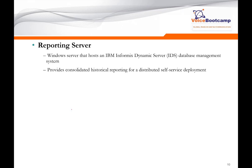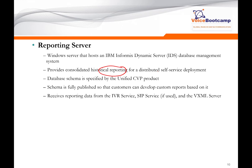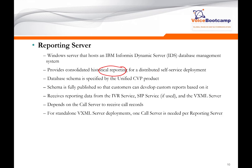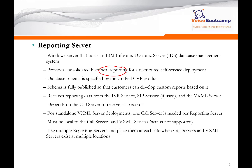The reporting server runs on Windows Server, which hosts IBM Informix database. It provides consolidated historical reporting for distributed service deployments. The database schema is specified by the CVP product and is available to customers for further custom creation of reports. It receives data from IVR service, SIP service, or VXML server. For standalone VXML server deployment, you need at least one call server for every reporting server. The reporting server must be on the same local area network as the call server or VXML server — WAN is not supported between them. Multiple reporting servers can be deployed in multiple locations, as long as each location has its own call server or VXML servers.